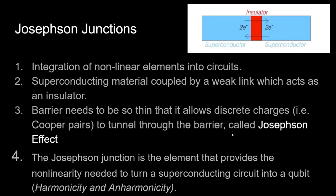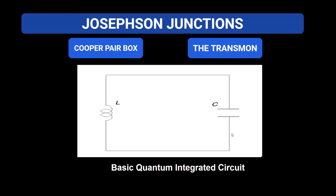The history of qubits starts from Josephson junctions. Josephson junctions are of two types: Cooper pair box and transmon. IBM circuits use transmon qubits. This is a basic quantum integrated circuit in which an inductor (L) and capacitor (C) are used — essentially an LC circuit.